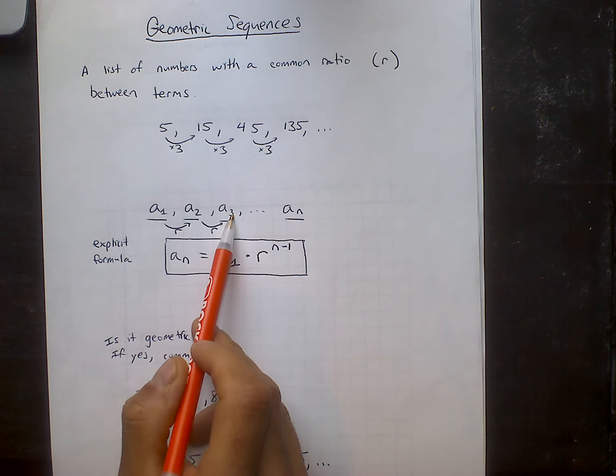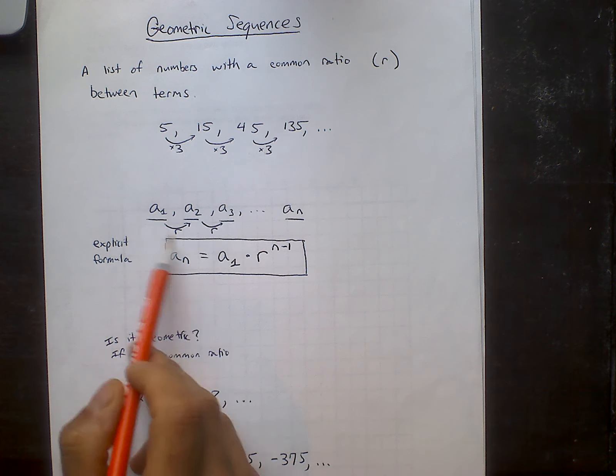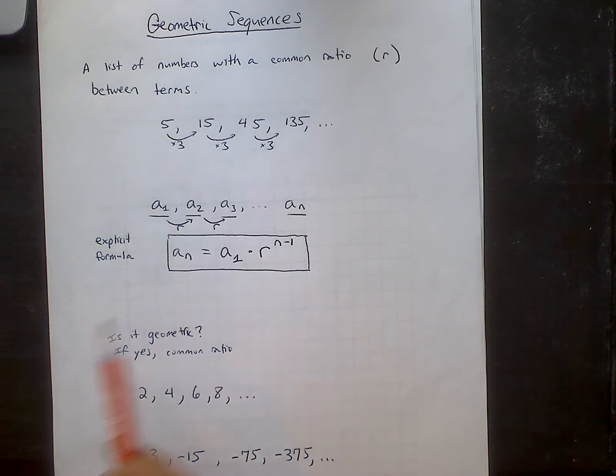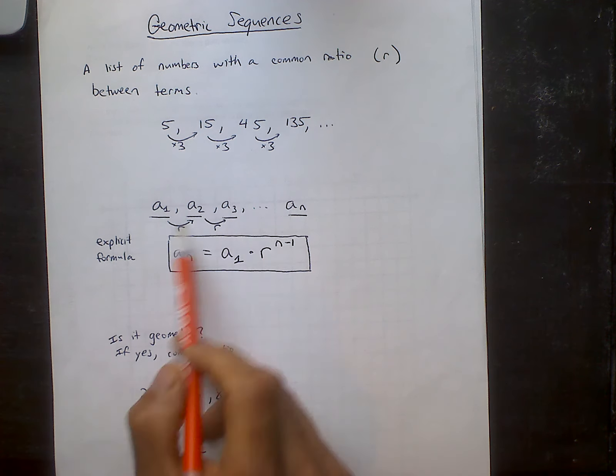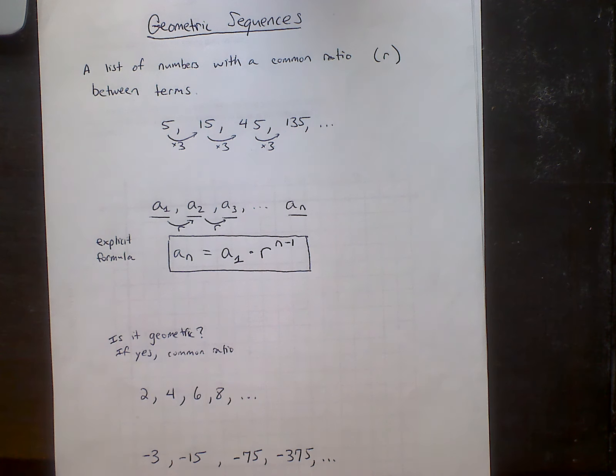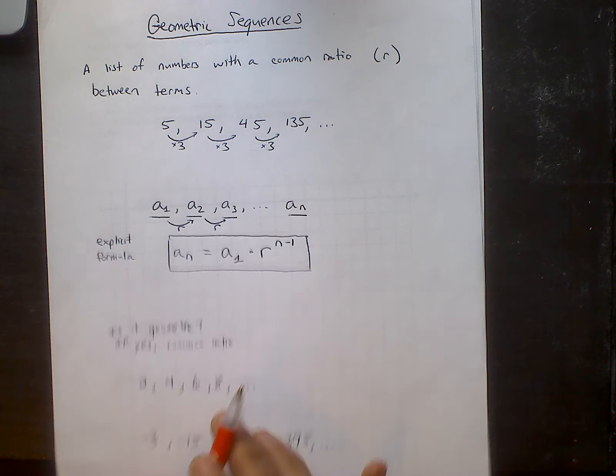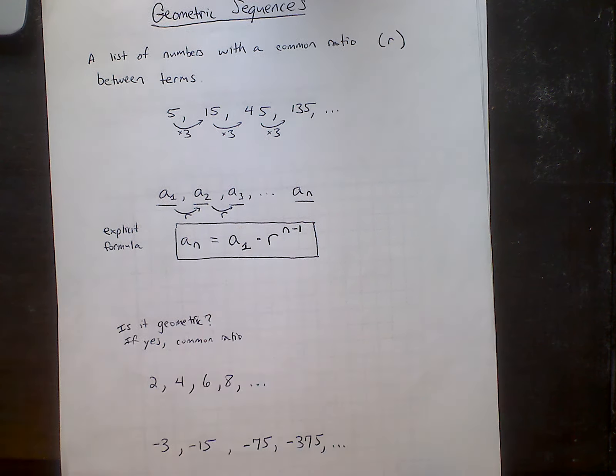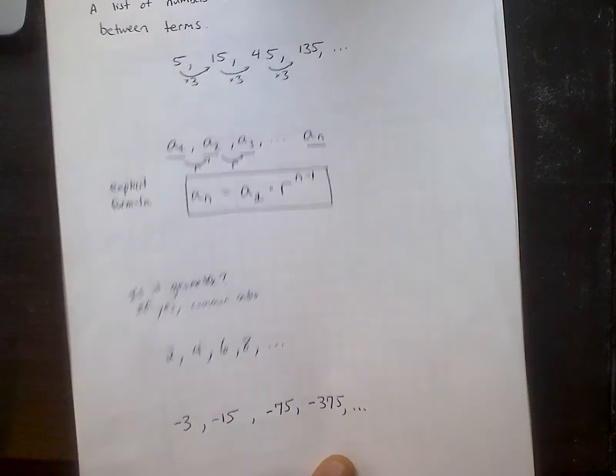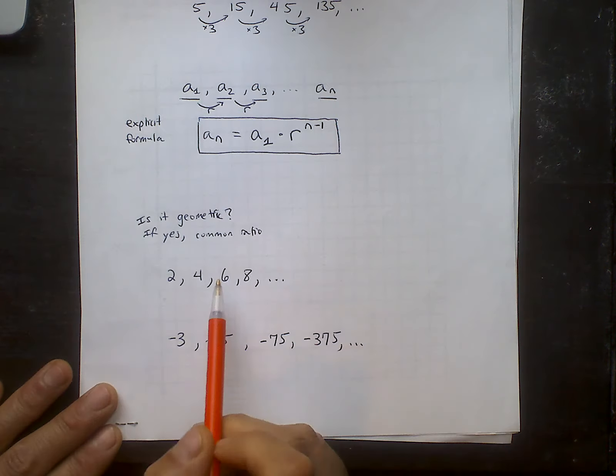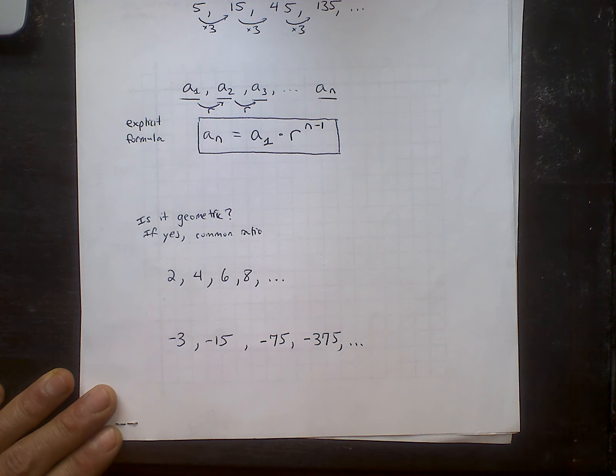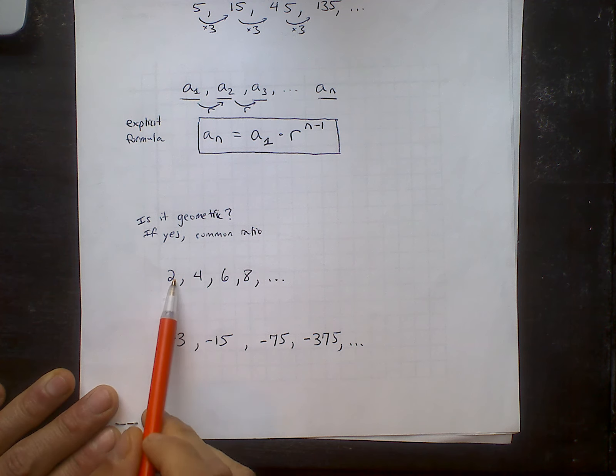For example, if I'm trying to get to the third term, I only multiply it by r twice. If I'm trying to get to the fifth term, I would need to multiply it by r four times. All right, we'll save this for later. Let's ask a couple questions. Is the sequence geometric? Two, four, six, eight. There's definitely a pattern here. So my question is, is there a common ratio to get to the very next number?